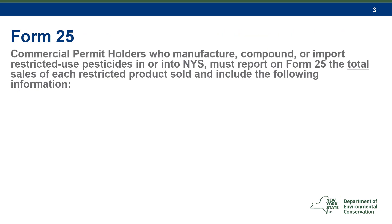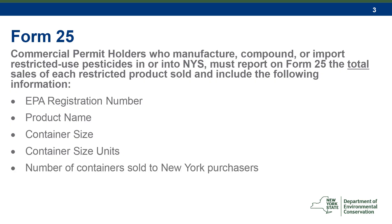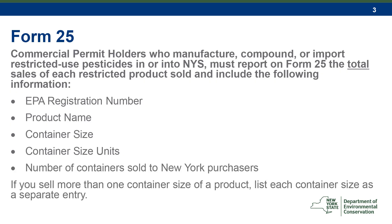Form 25 must be used by commercial permit holders who manufacture, compound, or import restricted-use products in or into New York State. Use Form 25 to report the total sales of each restricted product sold and include the following information: the EPA registration number, the product name, the container size, the unit for the container size, and the number of containers sold to New York purchasers. Please note that if you sell more than one container size of a product, list each container size as a separate entry in your report.